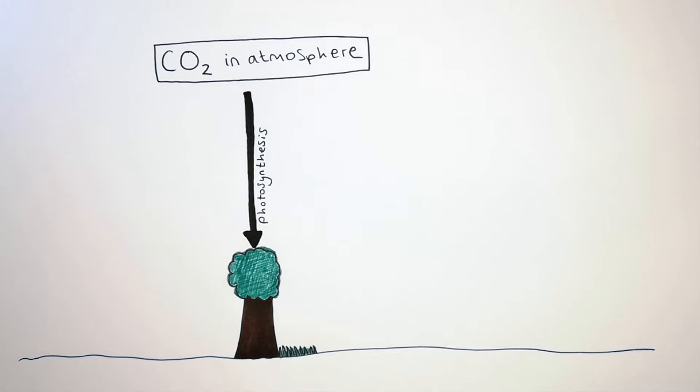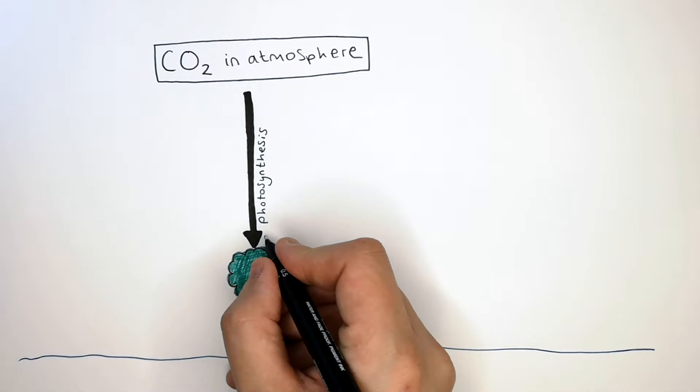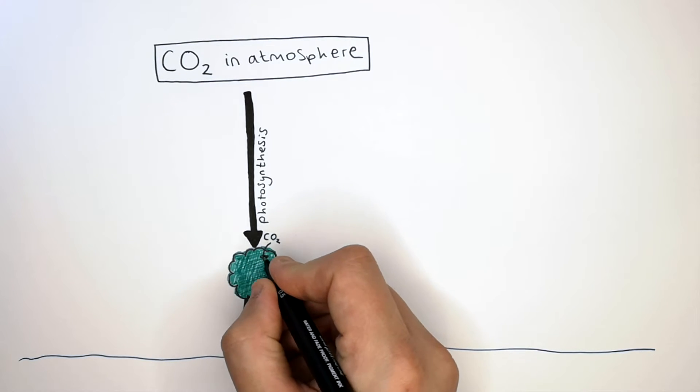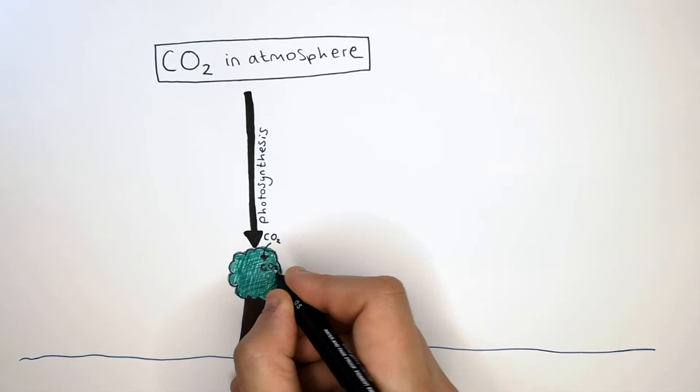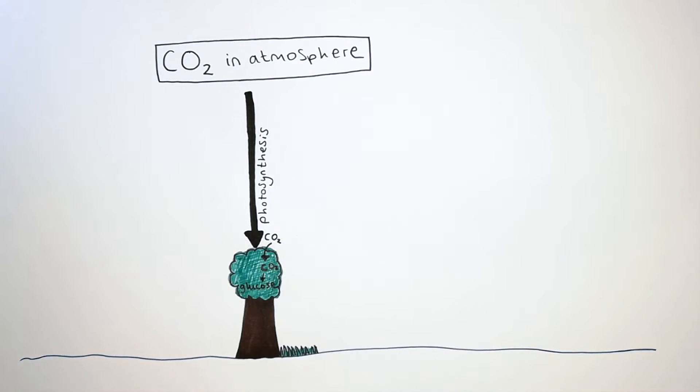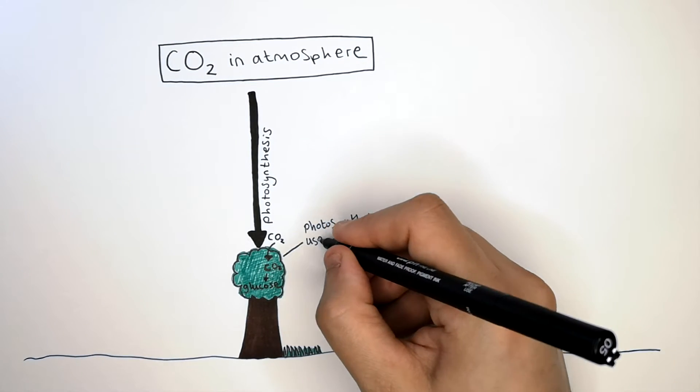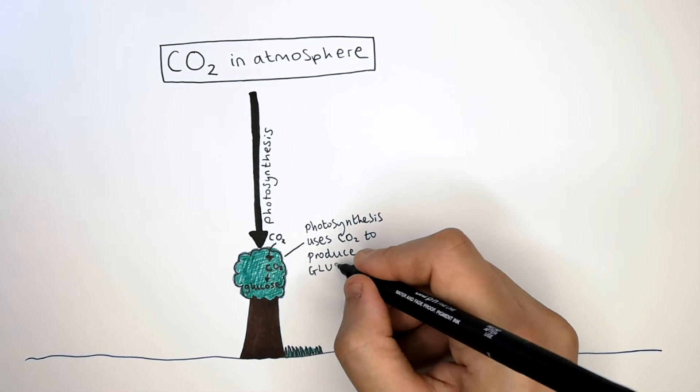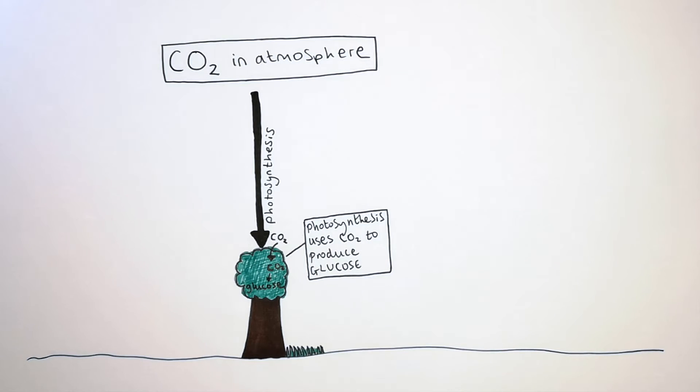Plants absorbing CO2 for photosynthesis are going to remove CO2 from the atmosphere, whereby CO2 is absorbed into the plant where it is used for photosynthesis and converted into glucose. Remember, photosynthesis uses CO2 to produce glucose. Glucose is stored as starch in plants.